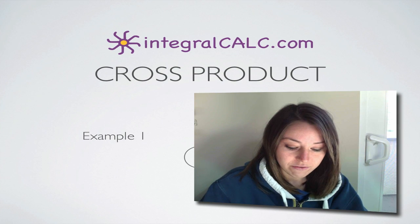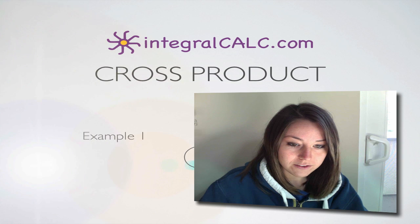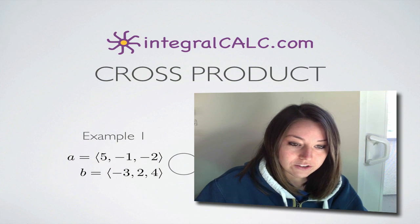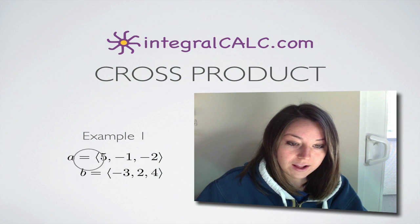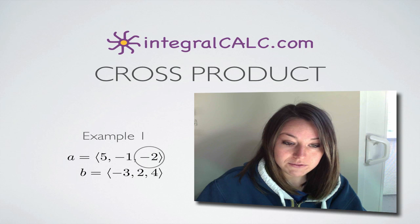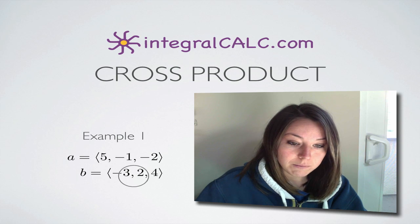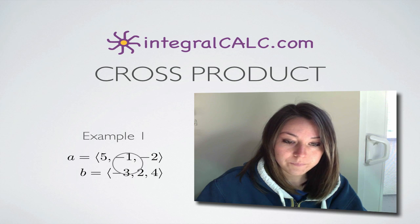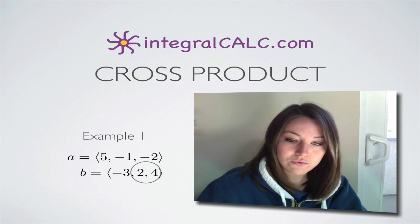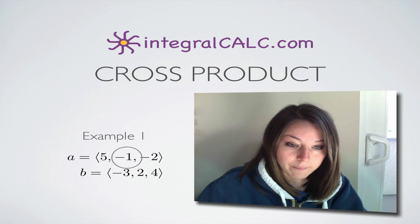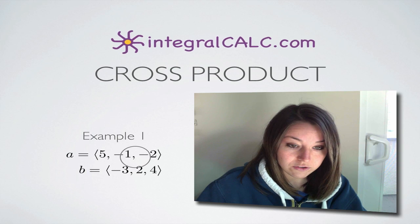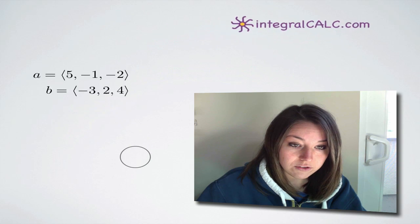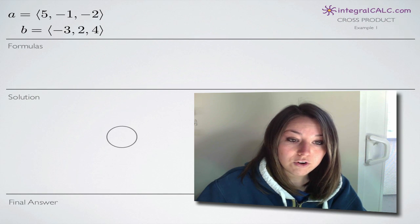Today we're going to be talking about how to find the cross product of two vectors. The vectors given in this problem are a equals (5, -1, -2) and b equals (-3, 2, 4). These are not in component form — the numbers are not coefficients on i, j, and k. We can just take these two vectors and go straight into finding the cross product.